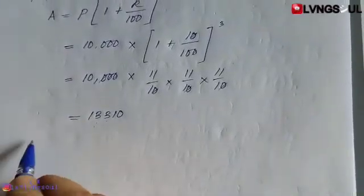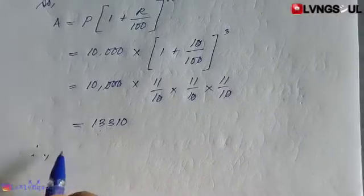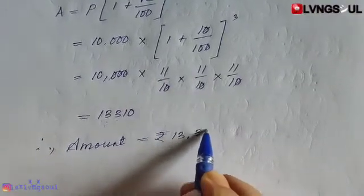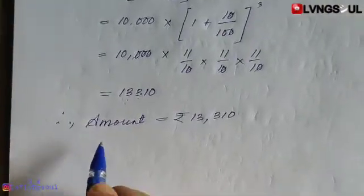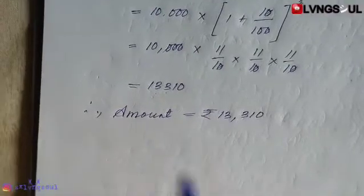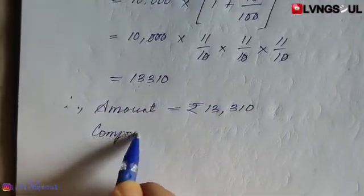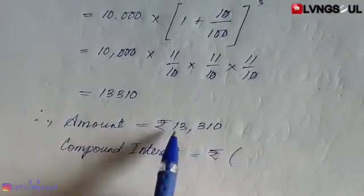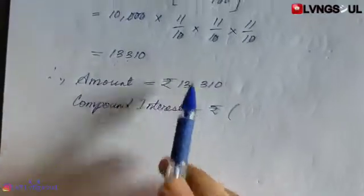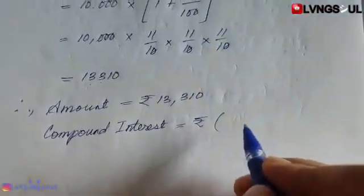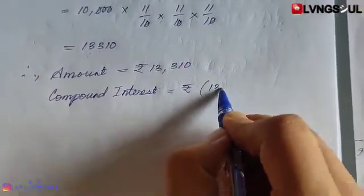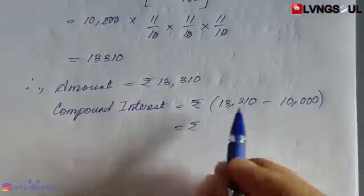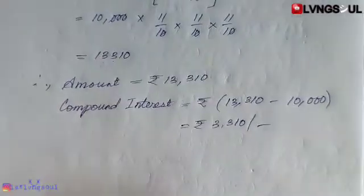Therefore, amount is equal to rupees 13,310. If you have interest, you will see your interest — the compound interest is amount minus principal amount. 13,300 is the answer.